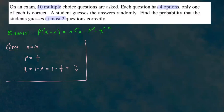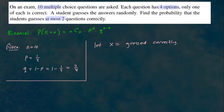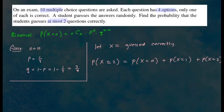Now let's define our event x. Let x denote the number of questions the student guessed correctly. We want the probability that the student guessed at most two, meaning x is less than or equal to two. So we break it up: probability x equals zero, plus probability x equals one, plus probability x equals two.